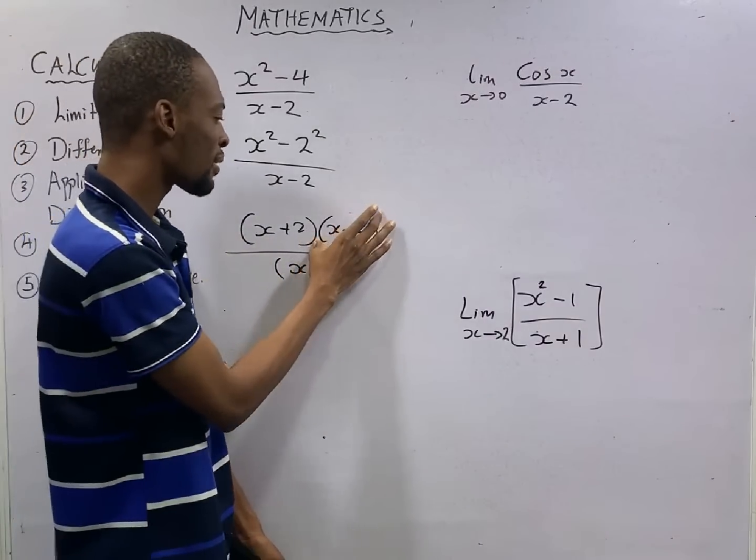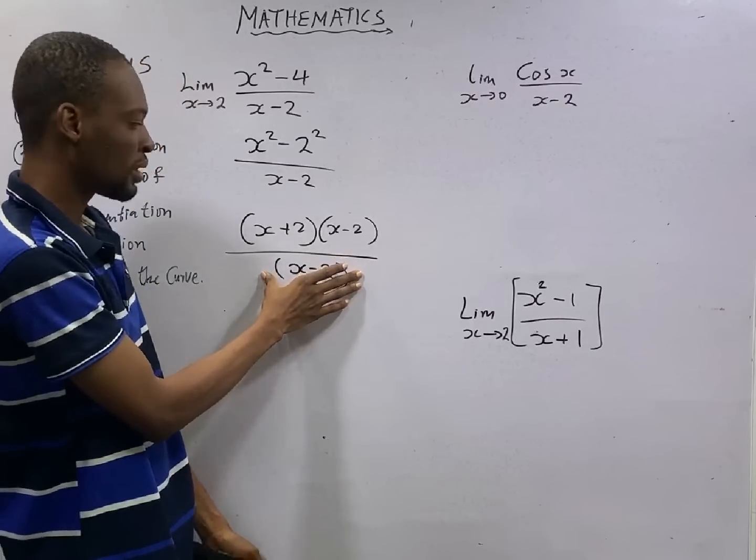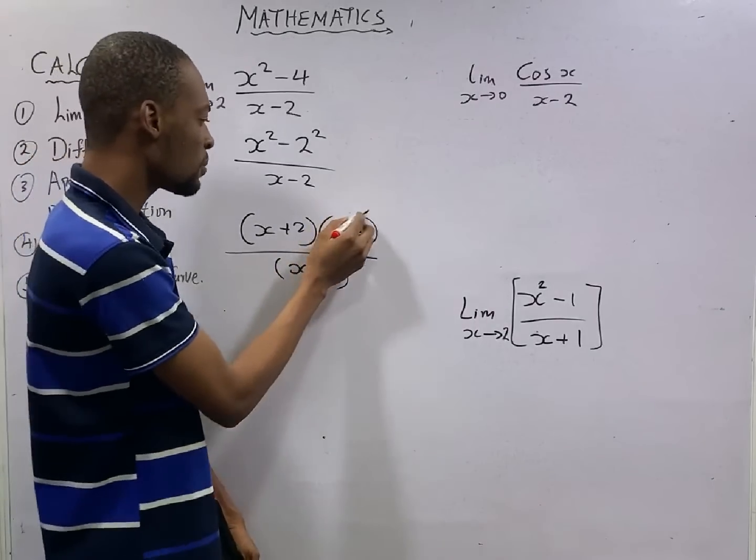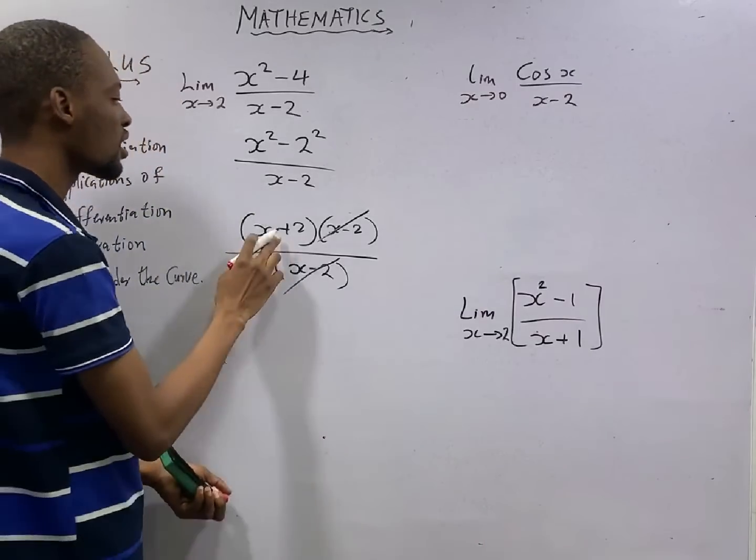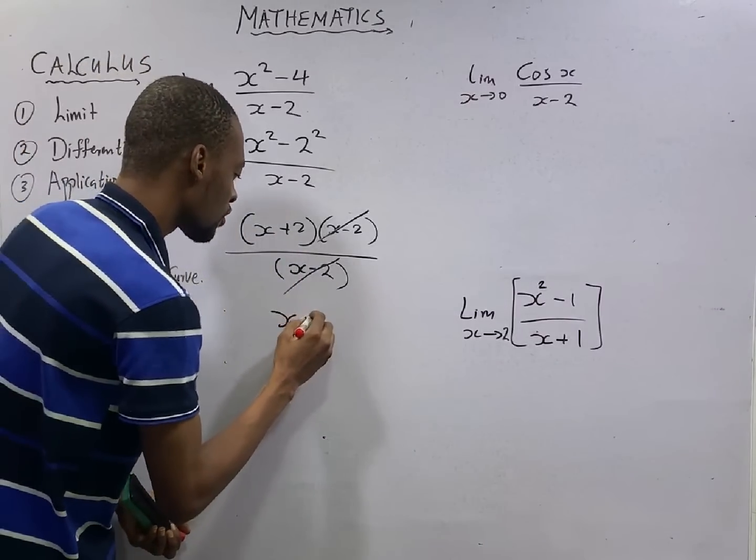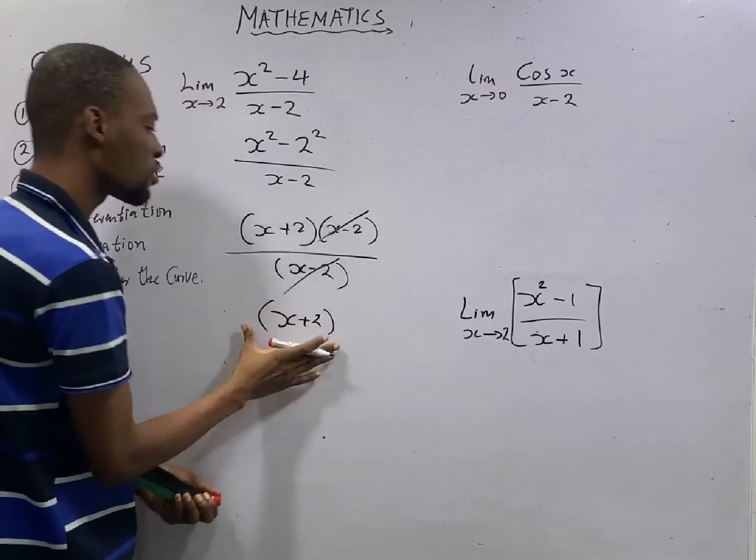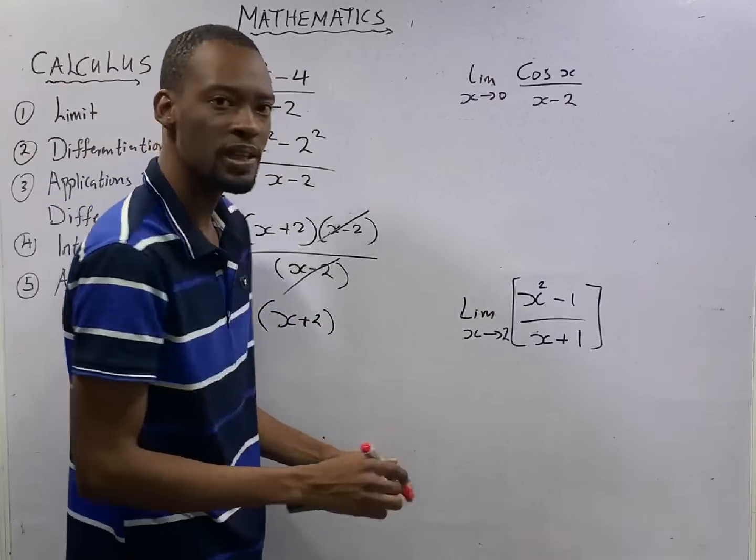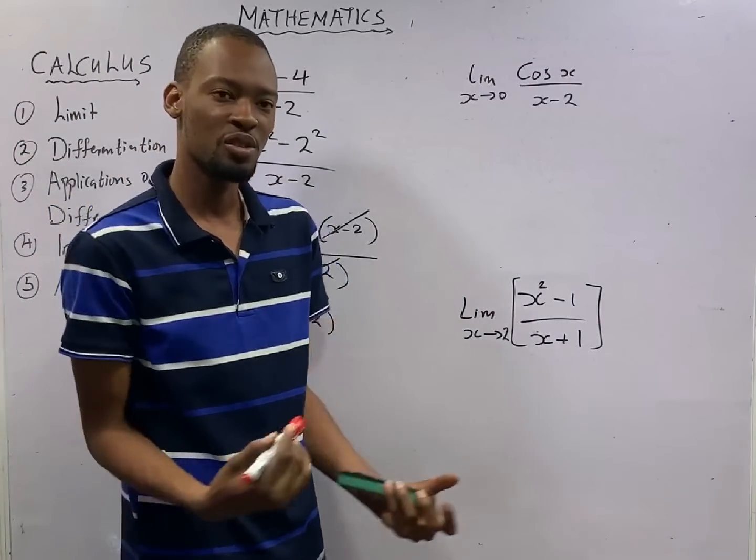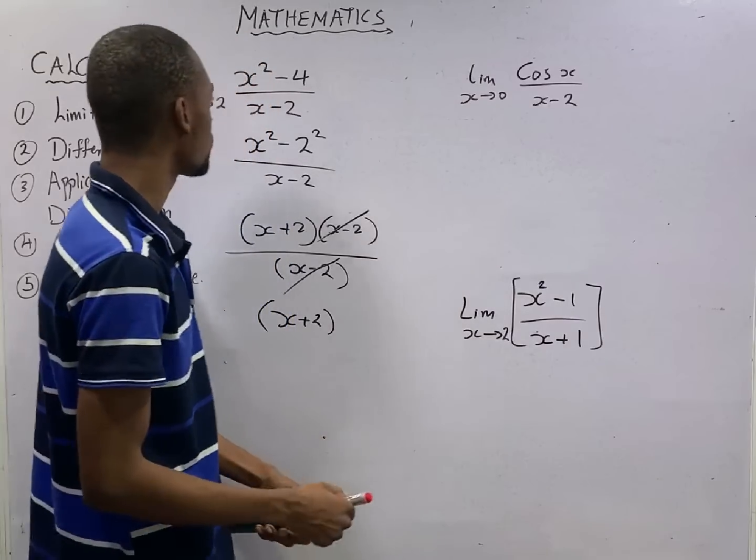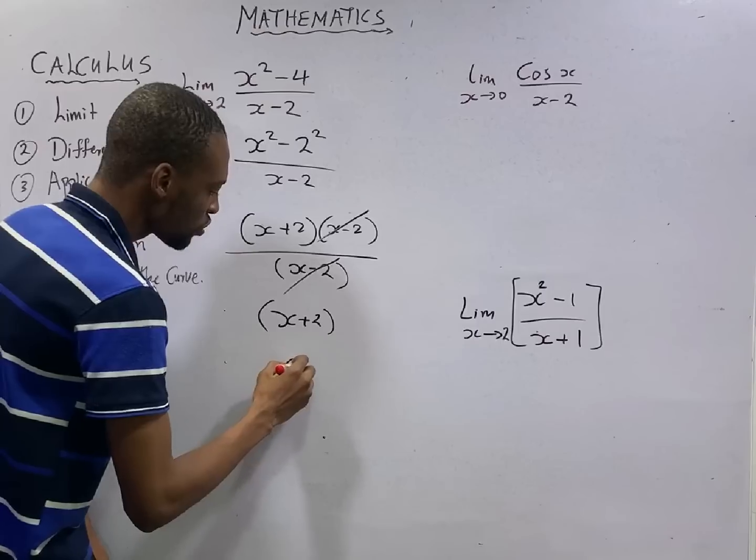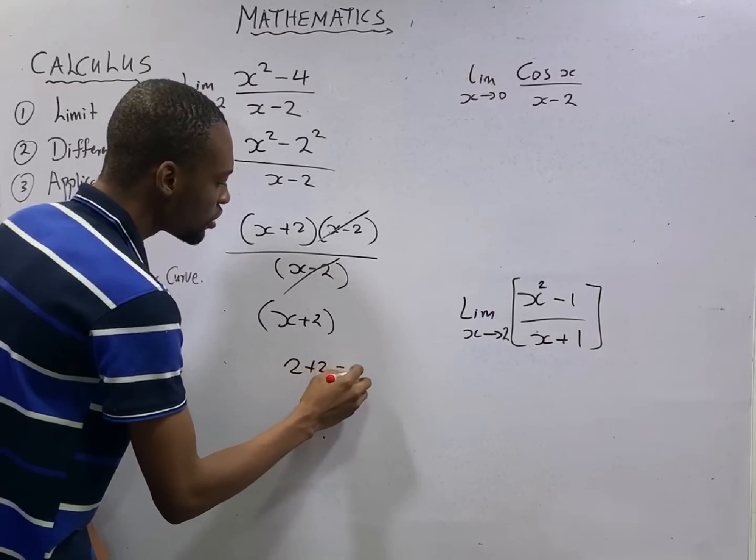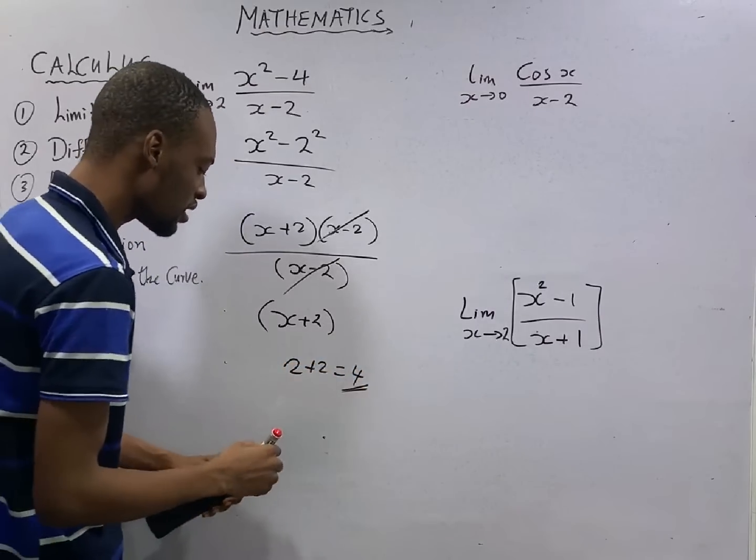Here, we have bracket s minus 2. Here, you have bracket s minus 2. It means s minus 2 divided by s minus 2. That is 1. You are left with s plus 2. This function is in its simplest form. Now, you can substitute. s tends to 2. That will give you 2 plus 2 to be equal to 4. So that is the limit.